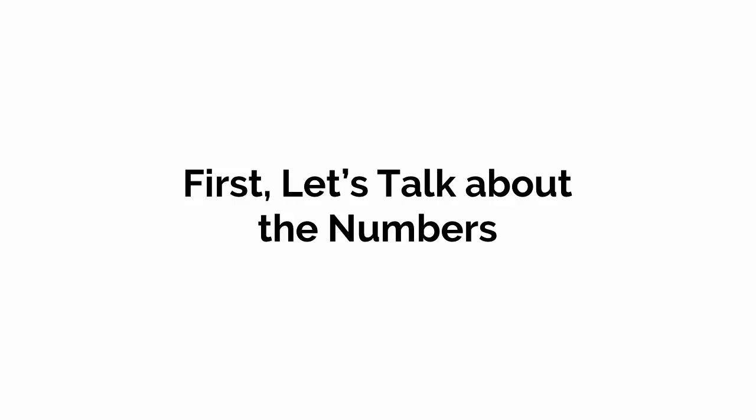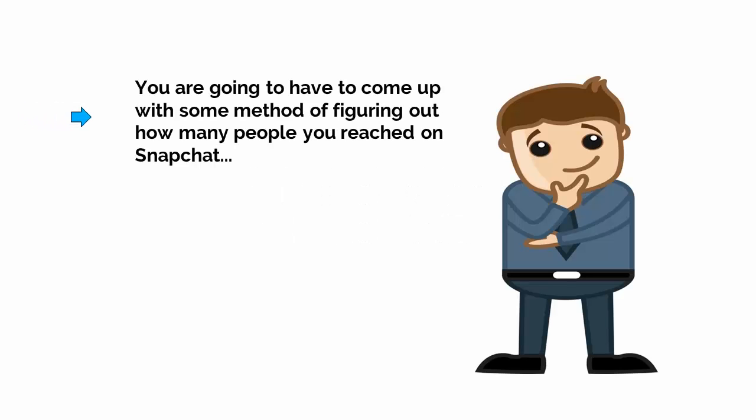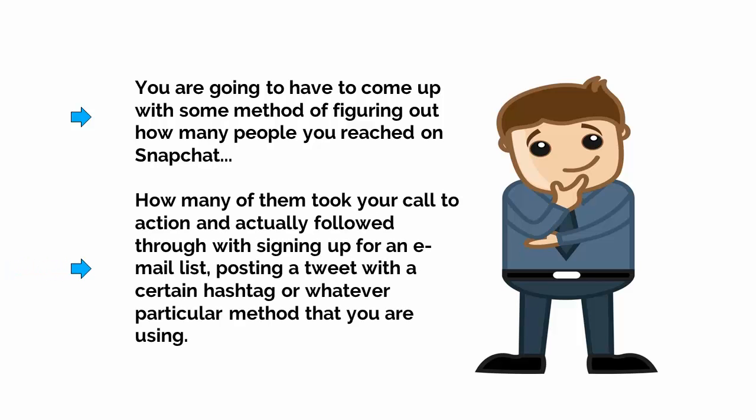First, let's talk about the numbers. Obviously the numbers are important, but there is a great deal more to be aware of. You need to come up with some method of figuring out how many people you reached on Snapchat, and how many of them took your call to action and actually followed through — signing up for an email list, posting a tweet with a certain hashtag, or whatever particular method you're using. You can make use of the Snapchat tools discussed in the analytics video, as well as your own methods of counting people who have responded.